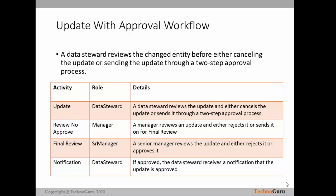The next activity is review with no approval, carried out by the manager. A manager reviews an update and either rejects it or sends it for final review. The final review will be carried out by the senior manager, who reviews the update and either rejects it or approves it. Finally, the notification will be sent through the system by the data steward — if the activity is approved, the data steward receives a notification that the update is approved.